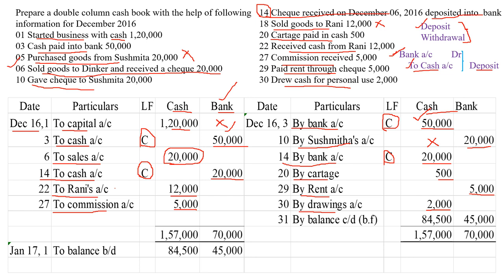After recording all the transactions, tally your ledger account and find out the balancing figure. The balancing figure will be called balance carried down, recorded on the last day — December 31st. This is the closing balance of cash and the closing balance of bank account. We are transferring this to the next month. On January 17th 1st, we are bringing down the balance — this is the opening balance for the month of January. So I hope you understood how to record entries in a single column and double column cash book, and how to record contra entries. Thank you for watching.